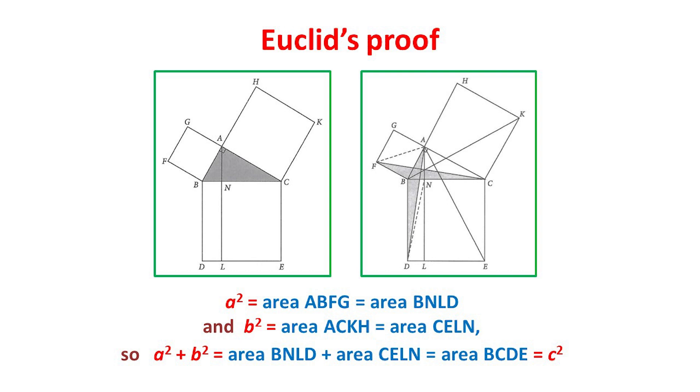In the diagram on the left, the vertical line down from A, at the top of the triangle, to the point L, at the bottom, splits the lower square into two rectangles.